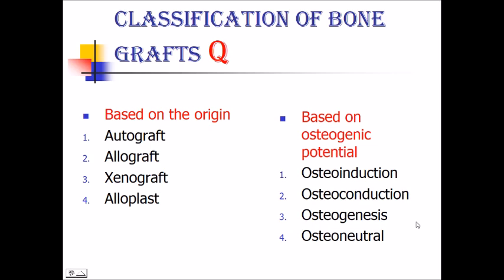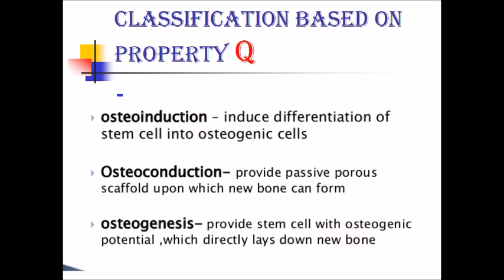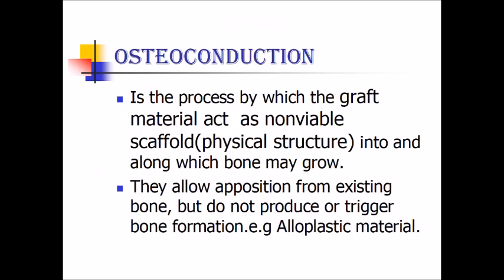Classification of bone graft: based on origin, it is classified as autograft, allograft, xenograft, and alloplast. Based on osteogenic potential: osteoinduction, osteoconduction, osteogenesis, and osteoneutral. Osteoinduction induces differentiation of stem cells into osteogenic cells. Osteoconduction provides a passive porous scaffold upon which new bone can form. Osteogenesis provides stem cells with osteogenic potential which directly lay down new bone.